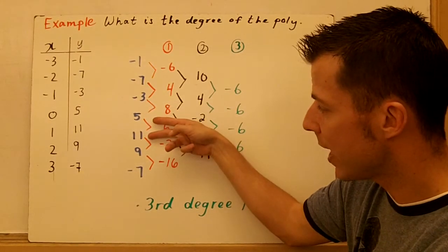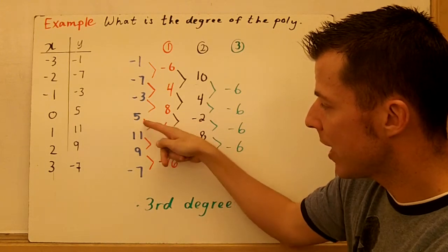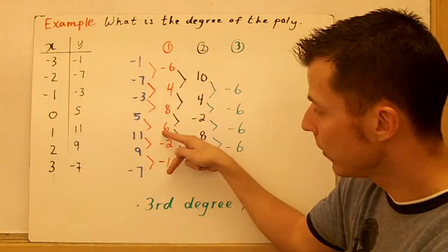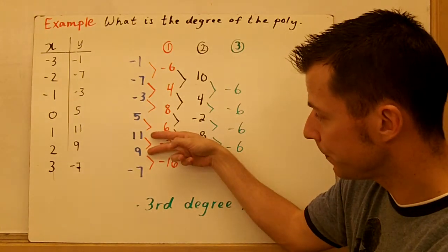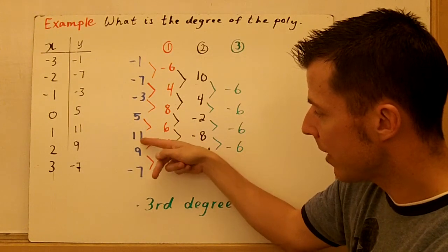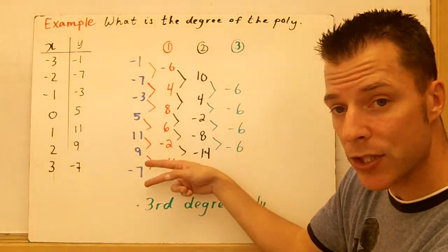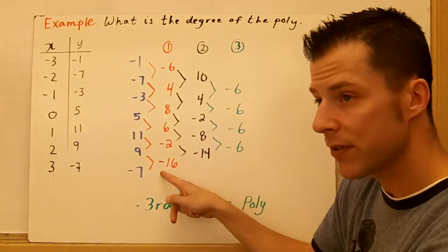We go down to 5 and 11. 11 minus 5 is 6. We go down to the next two. 9 minus 11 is -2. And the last two, -7 minus 9 is -16.